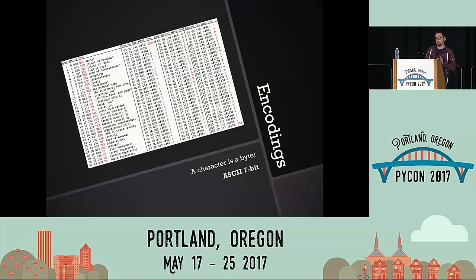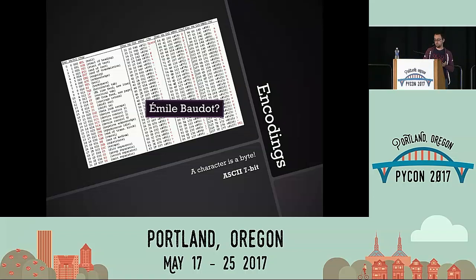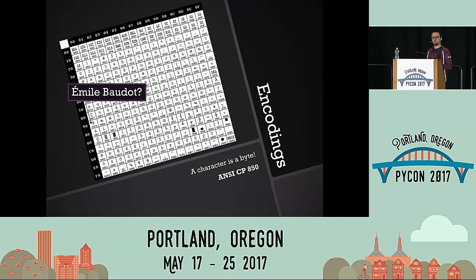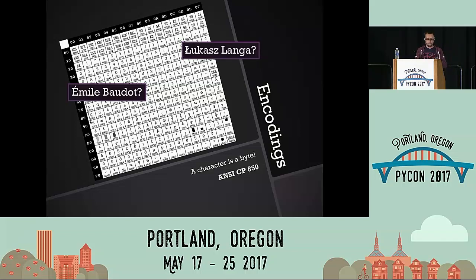The ASCII encoding has a bit of a problem. If the author of that machine — Émile Baudot — wanted to encode his own name in it, he couldn't. ASCII with 7 bits doesn't have the first letter of his first name. That was a problem for multiple use cases. So naturally, different code pages and encodings arrived later, which eventually allowed encoding Émile Baudot's first name. But what about me? In those code pages, you still couldn't write my name — we cannot write a sentence that includes both names.